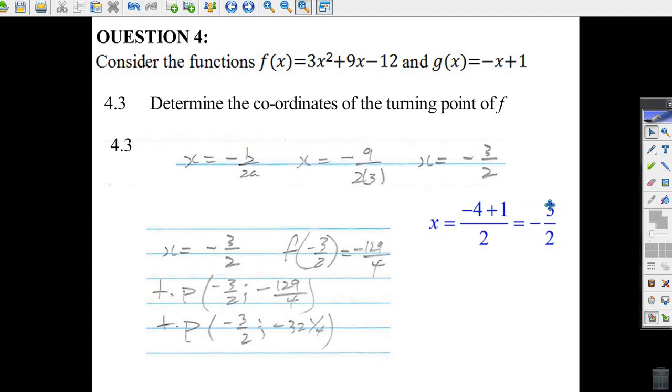Minus 4 plus 1 is minus 3 over 2. It's even easier than the minus b over 2a formula. Okay, there we go.